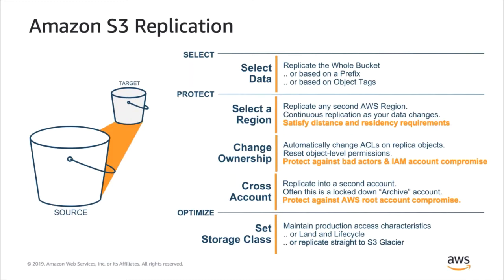To enhance security, you can choose to change the ownership of your replica copies, and also to replicate them to another account, so that no single user or single account can erroneously or unintentionally delete all copies of your data. Depending on your use case for the replica copy, you can choose to keep it in a Frequent Access Storage class or replicate it directly into an Infrequent Access or an Archive Storage class, such as S3 Glacier. You can also specify different lifecycle policies on your source and replica objects to optimize costs based on your access patterns in both the primary and secondary locations.